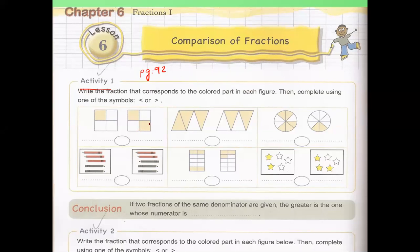Let's write the fraction that represents the colored part. The first one: in the numerator we have to write the number of colored parts, and down we have to write the total number of equal parts. How many parts did I color here? One part out of four. Here I colored two out of four. Here, three out of four. And here, just two out of four.